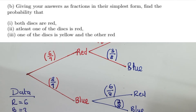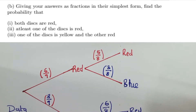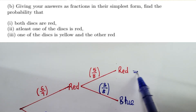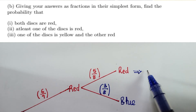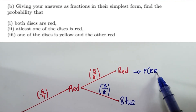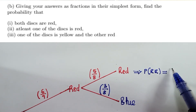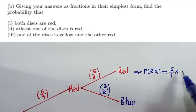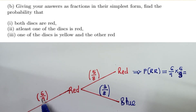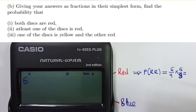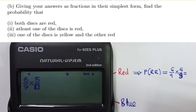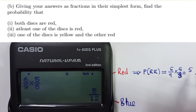Given your answers as a fraction in the simplest form, find the probability that both disks are red. For both disks being red, it's this path right here — red and red. So probability of picking red, red will be equal to 6 over 9 times 5 over 8. You multiply them since it's the same path. So we shall write 6 over 9 times 5 over 8, getting 5 over 12.